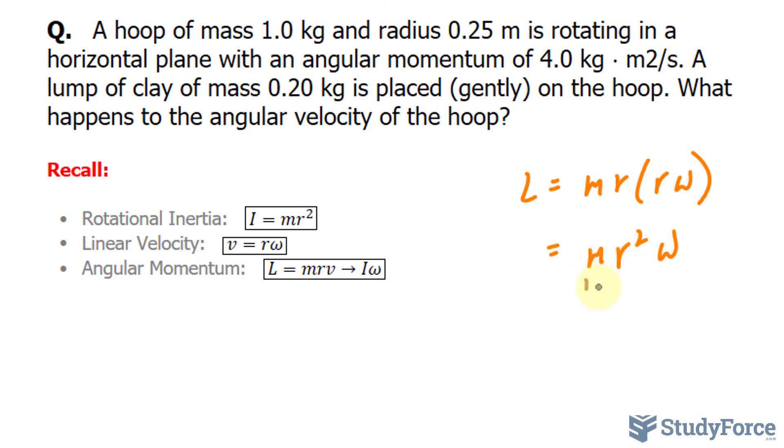We end up getting m times r to the power of 2 times omega. And as you can see, m times r to the power of 2 is equal to I. So therefore, angular momentum L is equal to the rotational inertia I times omega.